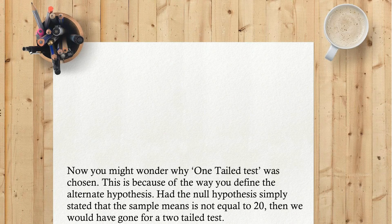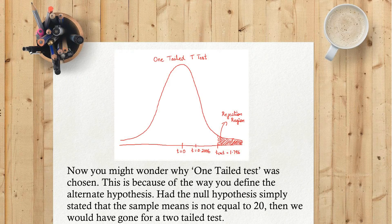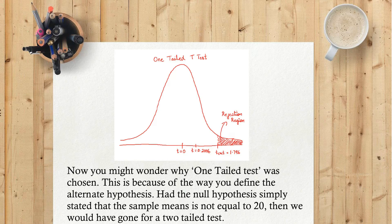Now you might wonder why one tailed test was chosen. This is because of the way you define the alternate hypothesis. Had the null hypothesis simply stated that the sample mean is not equal to 20, then we would have gone for a two-tailed test.